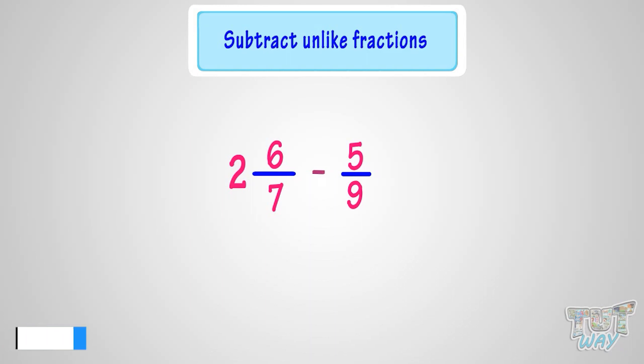Now let's subtract two unlike fractions. We have to subtract 5 by 9 from 2 6 by 7.